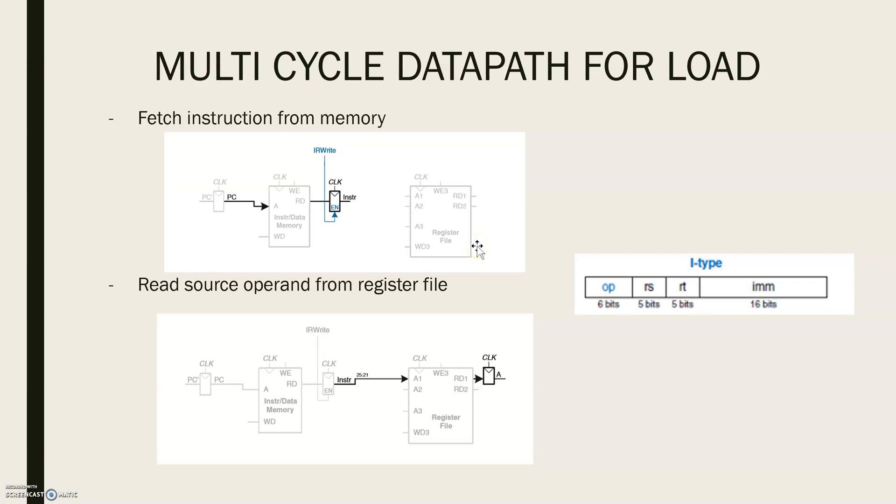The first step will be to fetch the instruction from instruction memory. For a load, the value will be taken from PC and this PC will be connected to the address pin A of the instruction memory. The instruction is read and stored in a new non-architectural instruction register so that it is available for future cycles. This instruction register will receive an enable signal called IRWrite that is asserted when it should be updated with a new instruction.